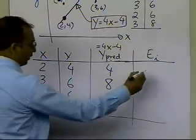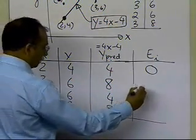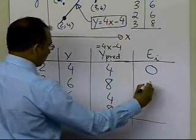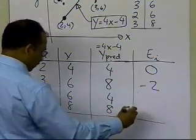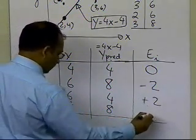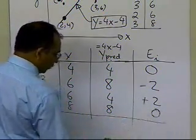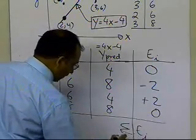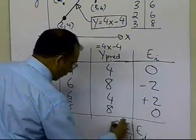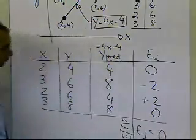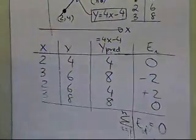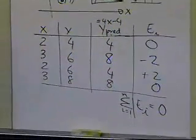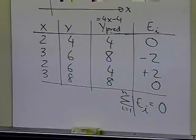What are the residuals? At the first point the residual is 0, at the second point it is -2, at the third point it is +2, and at the fourth it is 0. If I sum the errors — the summation of e_i from i=1 to n — I get 0. So that seems like a good straight line to use, since the sum of residuals is 0.